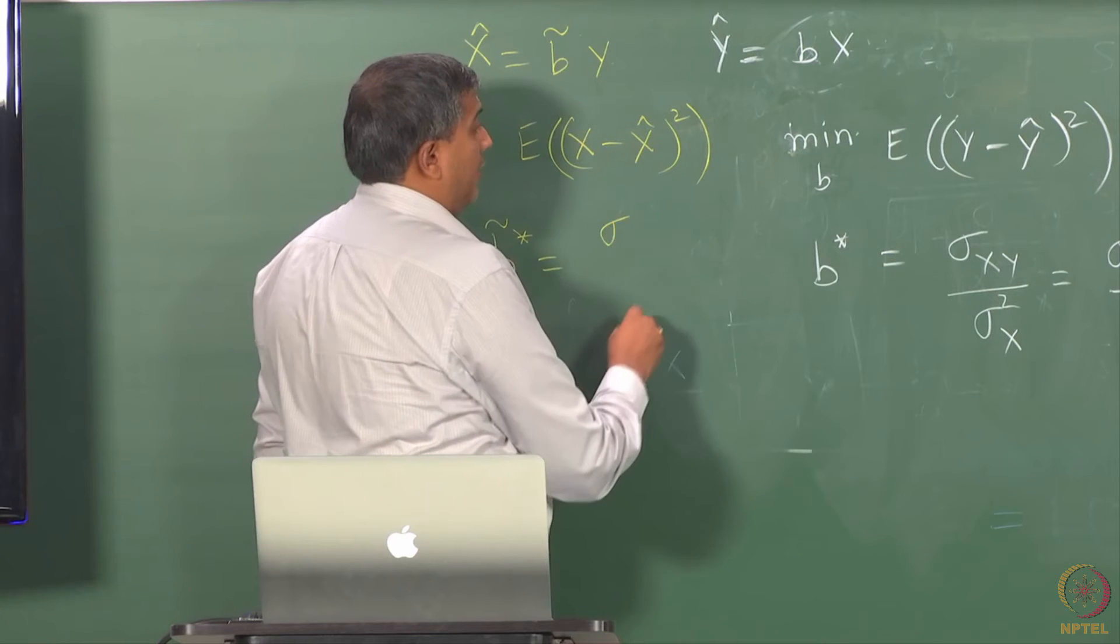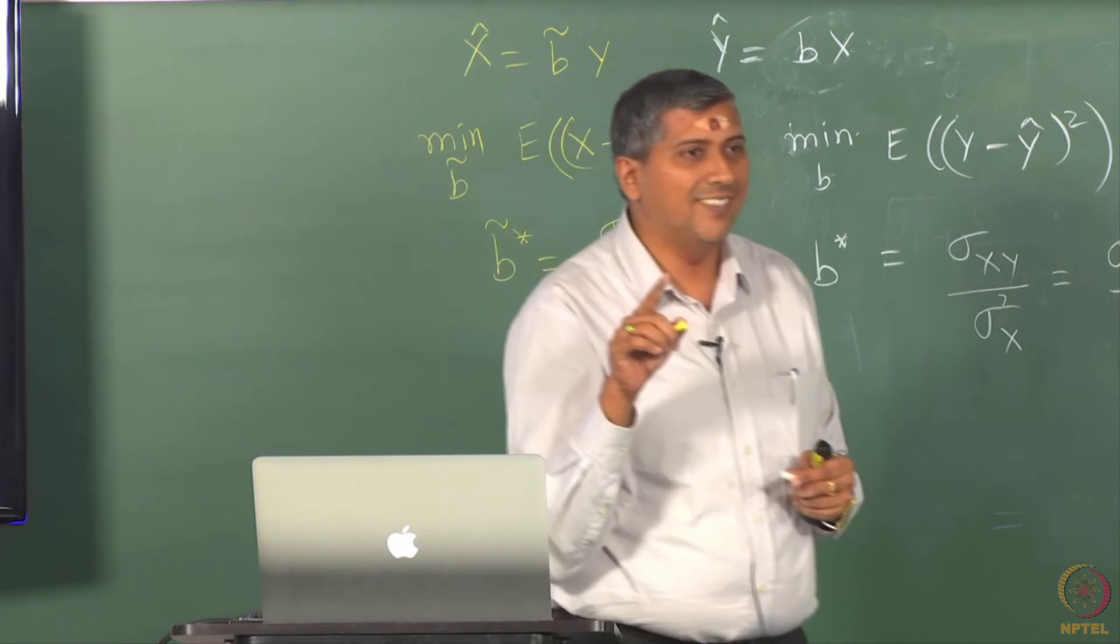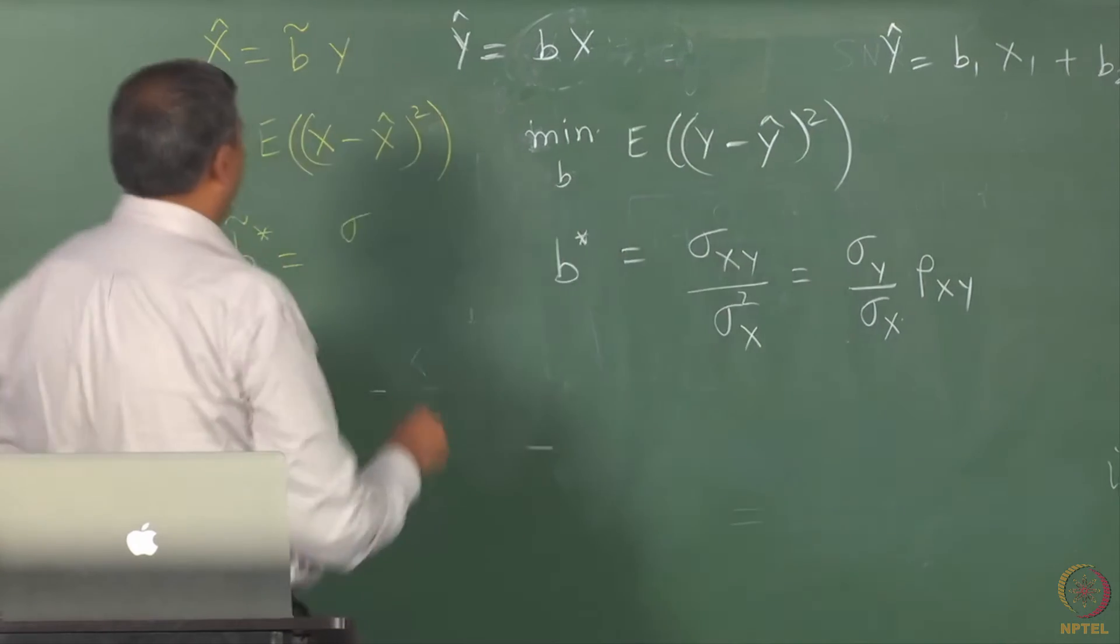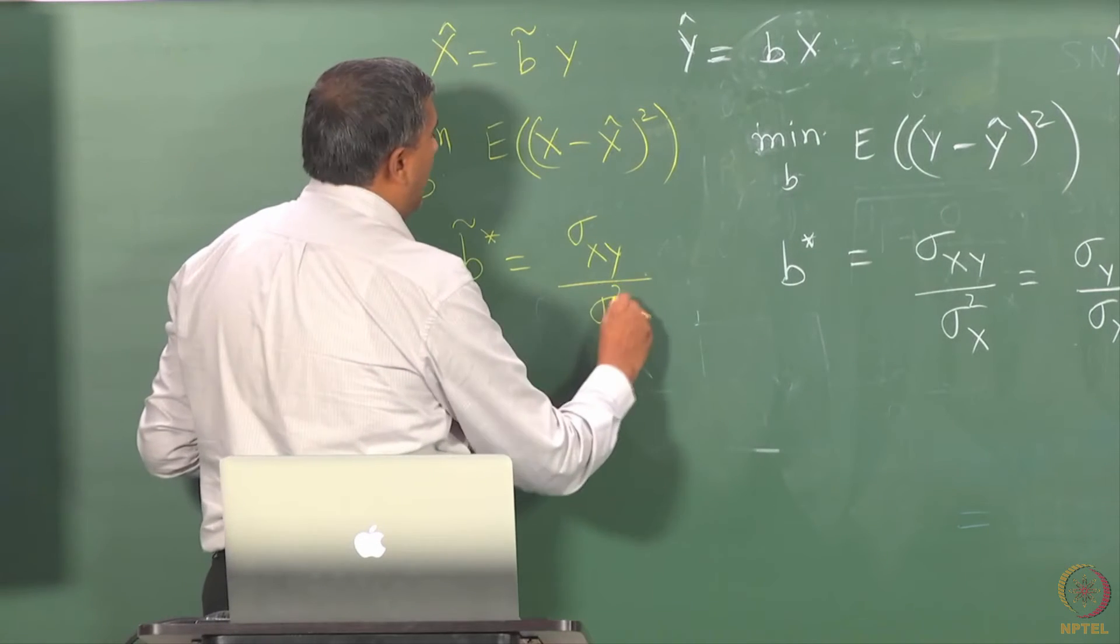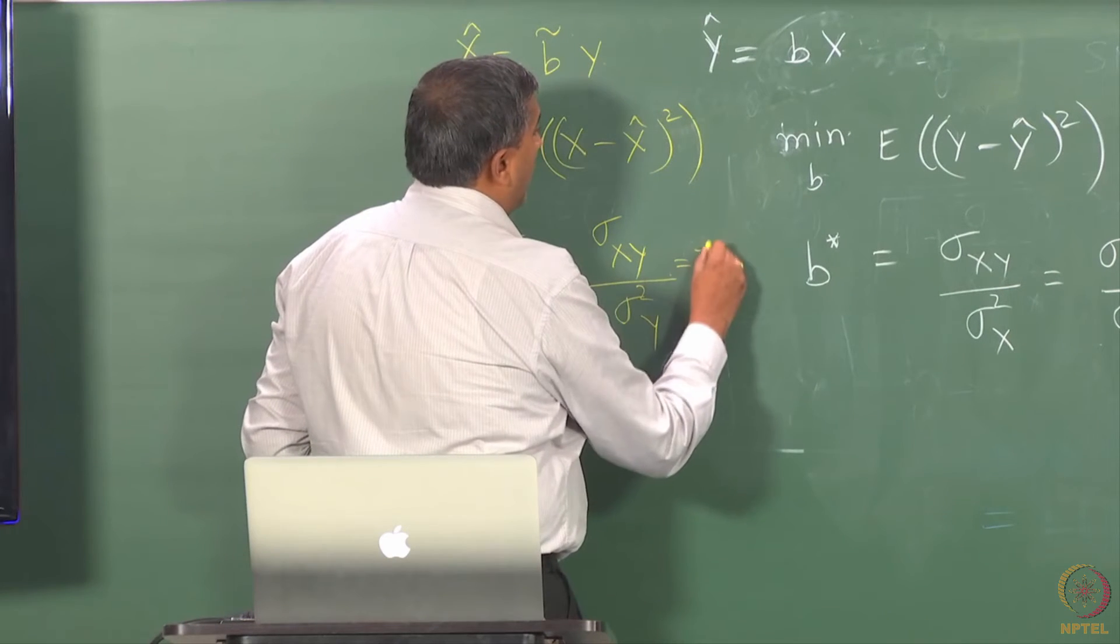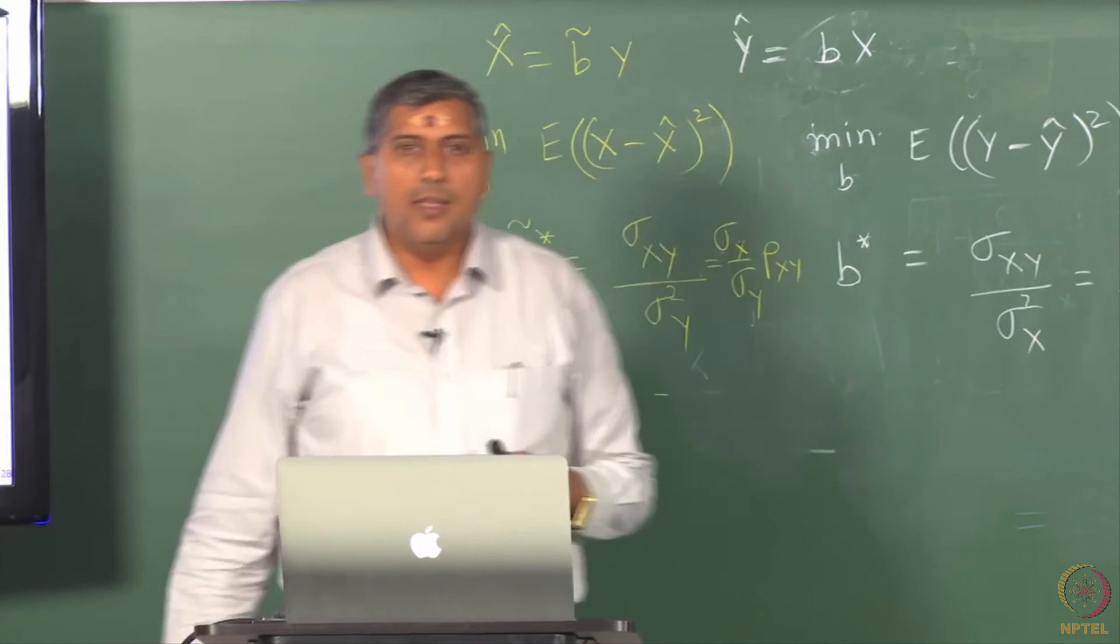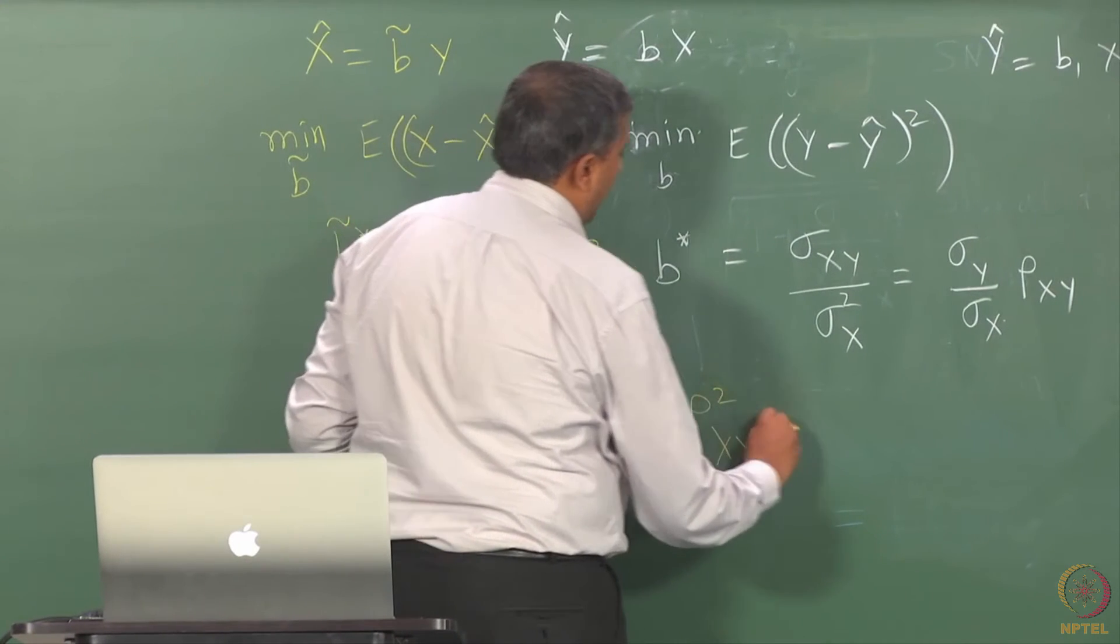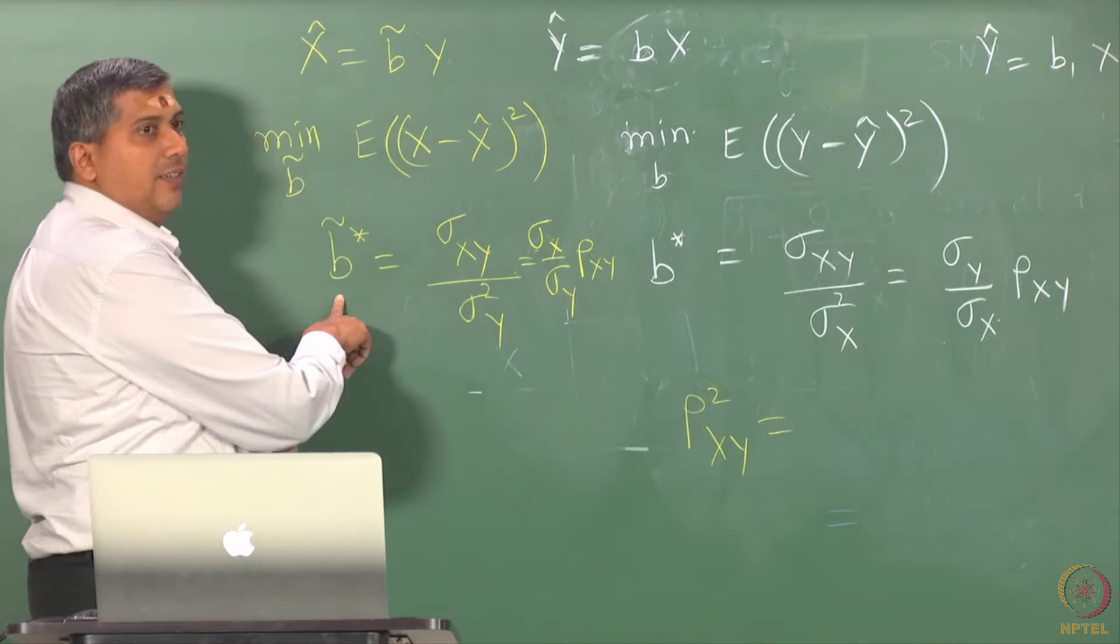So here I am given x, I am trying to predict y; here I am given y, I am trying to predict x. What would be b tilde star? Sigma... I hear the numerator synchrony or symphony, but it does not matter - the order of subscripts does not matter here. Sigma squared y, right? Which again I can rewrite as sigma x by sigma y times rho xy. Now you should straight away observe that the squared correlation is b star times b tilde star, right?